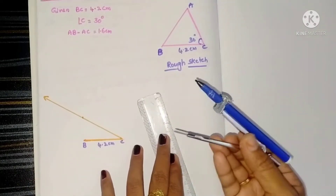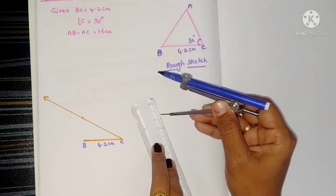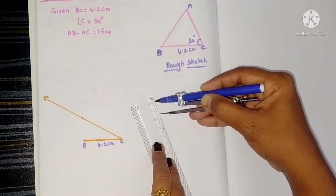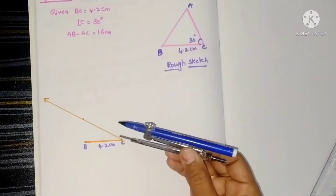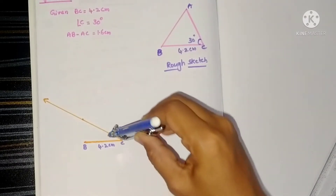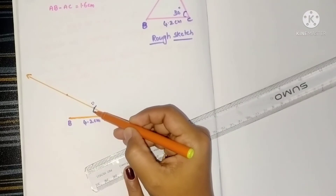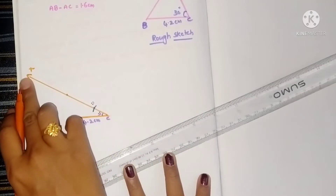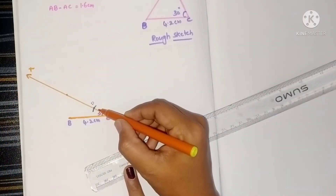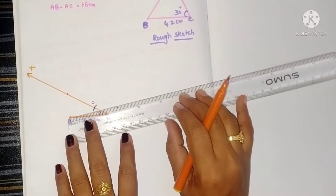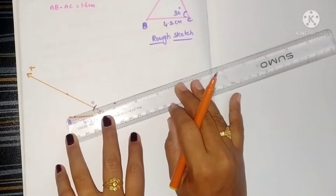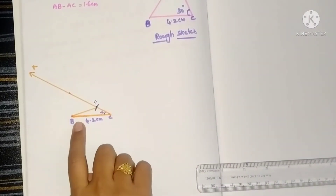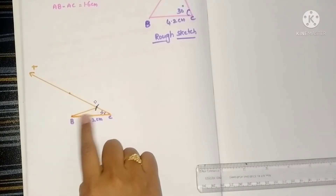Take the scale and with the compass measure the distance of 1.6 centimeters. Taking C as center, draw an arc intersecting the ray. Mark that intersection point as D. Now join B and D.